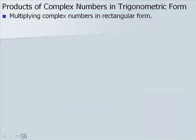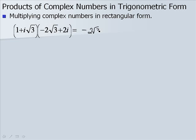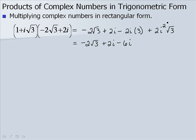Let's look at multiplying complex numbers in rectangular form. We multiply and FOIL out the expression. We get negative 2 square root of 3 plus 2i minus 6i plus i squared times 2 square root of 3. Remember that i squared is negative 1. So we have negative 2 square root of 3 plus 2i minus 6i plus negative 2 square root of 3. Combining like terms gives us negative 4 square root of 3 minus 4i.